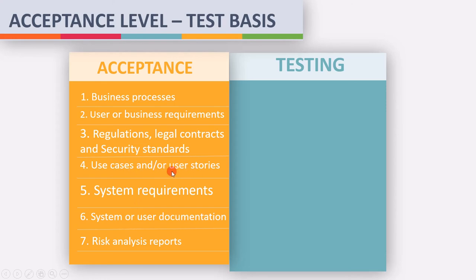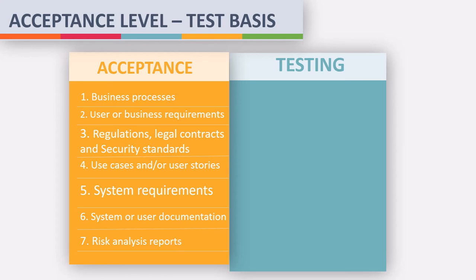Next is use cases or user stories, which provide information on how a user is going to use the software. Next is system requirements or user documentation, which provides information on how the software should be implemented, so we can verify if the implementation is as expected. The next requirement is a risk analysis report, which helps the tester understand which features are most important so that testing can be prioritized accordingly.